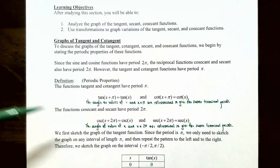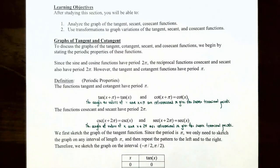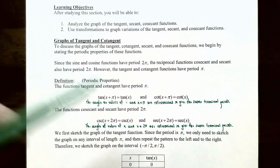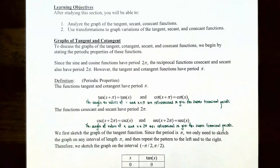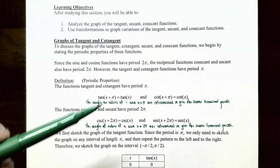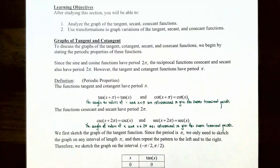The functions cosecant and secant have a period of 2π. Cosecant(x + 2π) = cosecant(x), and secant(x + 2π) = secant(x). The values of x and x + 2π are coterminal, which gives the same terminal points, meaning cosecant and secant have the same value for x and x + 2π.